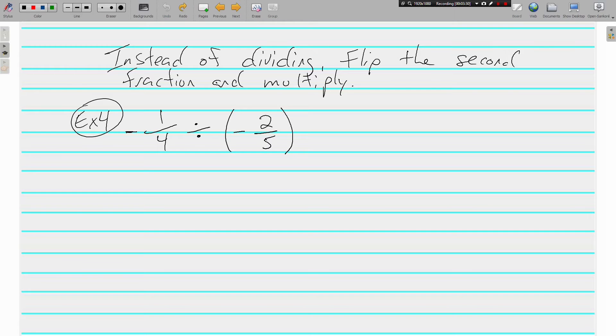But whenever you're dividing fractions, the first fraction stays the same. Never flip the first fraction. It's just 1 4th and we're going to be multiplying by 5 halves. See what I did? Instead of 2 5ths, I have 5 halves. Flip and multiply.